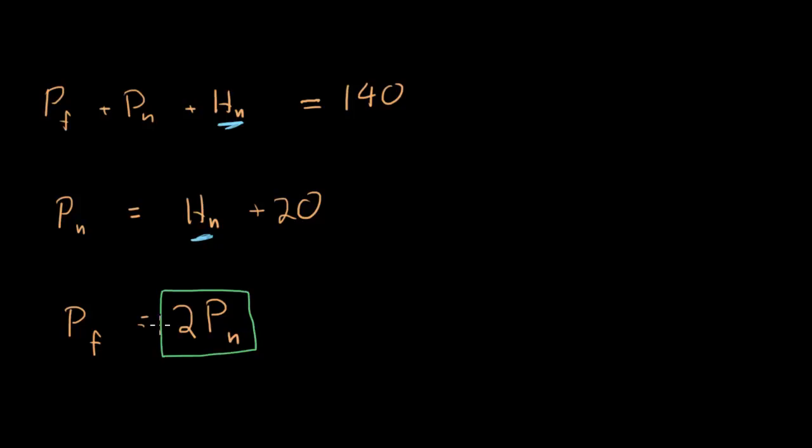Now P_f is now 2P_n, which is nice because now this big original equation is down to just two variables: 2P_n + P_n + H_n = 140. Let's simplify this a little bit. We can combine like terms: 2P_n plus P_n is 3P_n plus H_n equals 140.